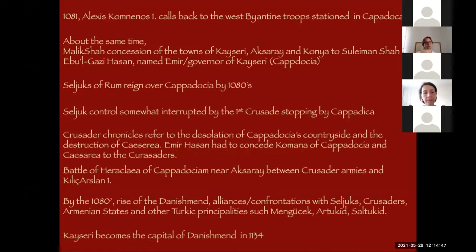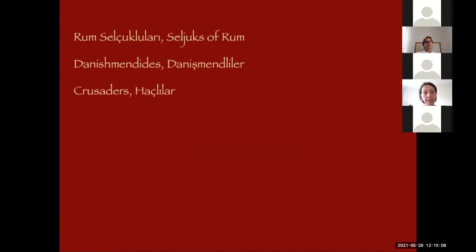Danishmend control of Cappadocia was partial, beginning at the end of the 11th century and gradually increasing. In 1134, Melik Danishmend made Kayseri the capital, and the city was rebuilt. By the end of the 11th and early 12th centuries in Byzantine Cappadocia, there were four powers competing: Rum Seljuks, Danishmends, Crusaders, and the neighboring Armenian states — though these are almost never mentioned in written sources about Cappadocia.